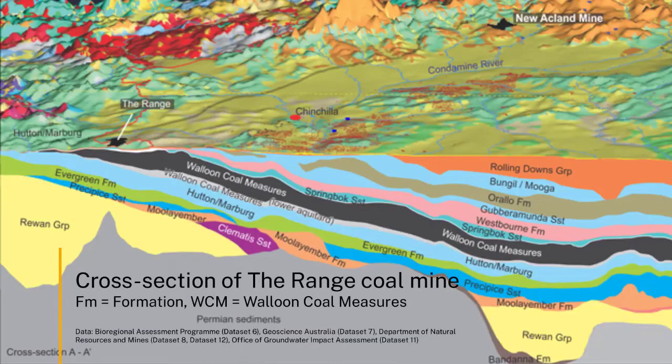So where does groundwater come into this? In these sedimentary basins, we have quite a lot of successive sedimentary deposits as the basin and the basement have lowered due to tectonic forces. So we'll have alternating sand-rich and clay-rich layers, with coal and sand and clay in between. In each of these predominantly sand-rich deposits, the pore spaces between the sand, the clay, and the gravel are filled with water — and that is what we call groundwater. They occur in the sand deposits and also in the coal deposits as well.